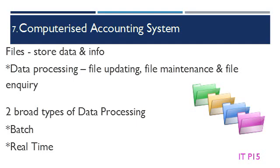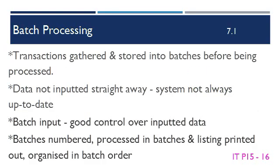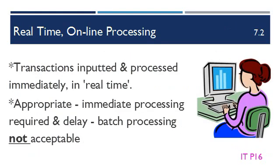Both manual and computerized data processing can be divided into two broad types: batch processing and real-time processing. Batch processing is when transactions are gathered and stored into batches before being processed. The data in a batch is not inputted straight away, so the system is not always up to date. Batch input allows for good control over inputted data because the data can be grouped into numbered batches. The data is processed in those batches and a listing is printed out organized in batch order. If any information goes missing, it is possible to find the batch in which the information was part of by using the batch numbers. Real-time processing is when transactions are inputted and processed immediately in real-time. This type of processing is appropriate when immediate processing is required and the delay in batch processing is not acceptable.